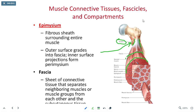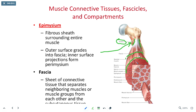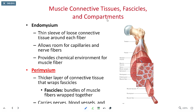I want to emphasize this very clearly: tendons attach muscles to bone, while ligaments attach bones to bone. We have our first two layers — the fascia connects to the epimysium. There are also other layers that wrap around these muscles: we are going to have an endomysium and perimysium.